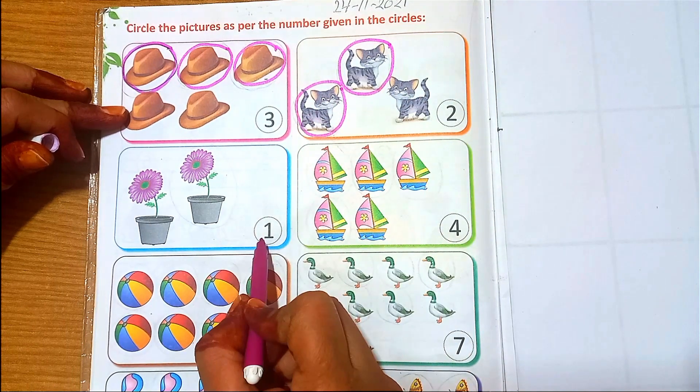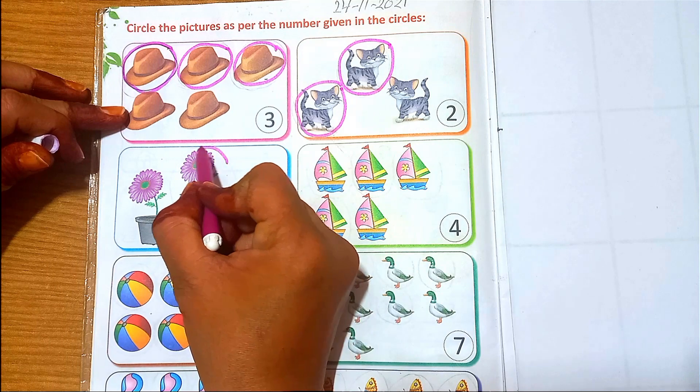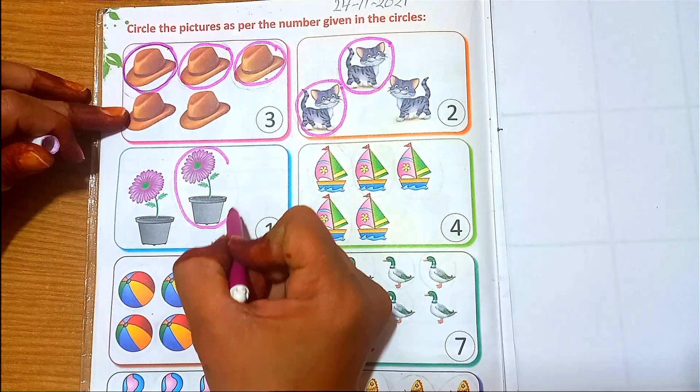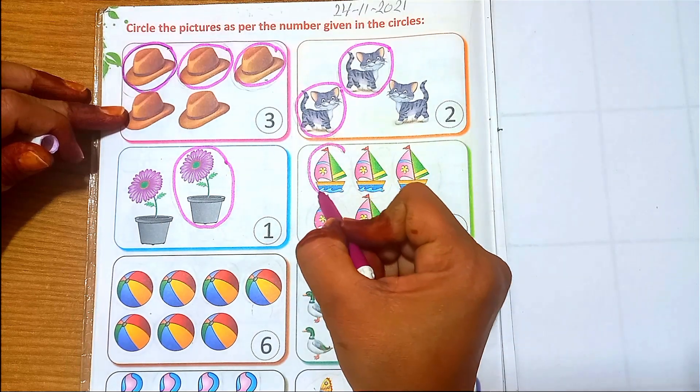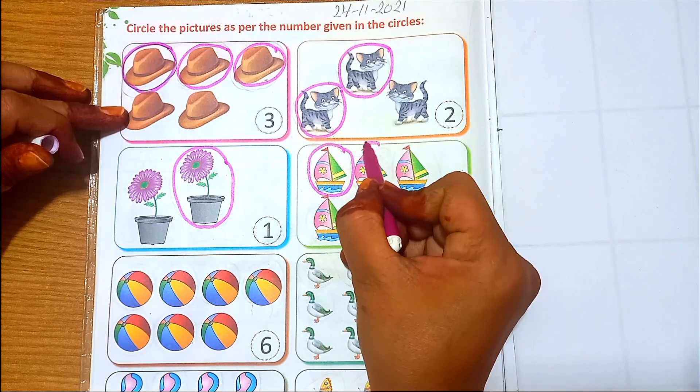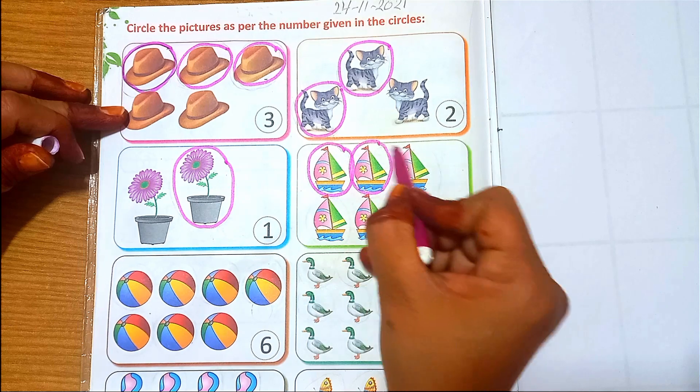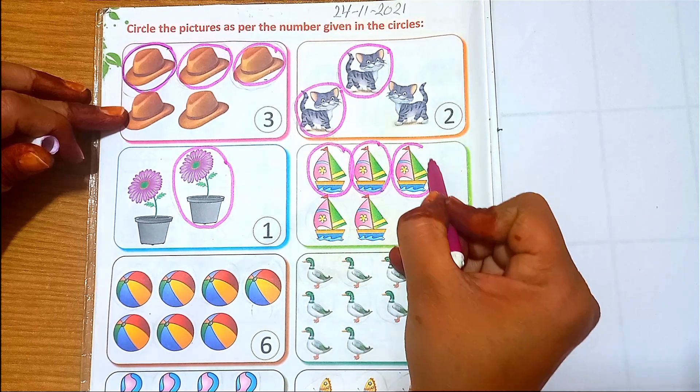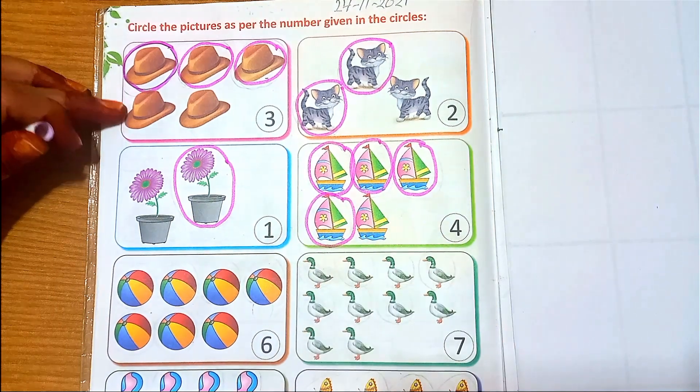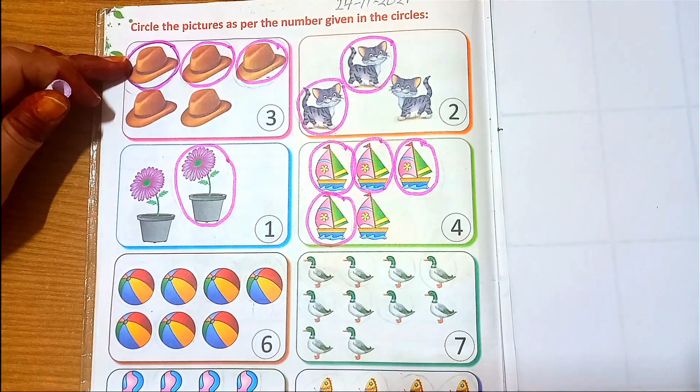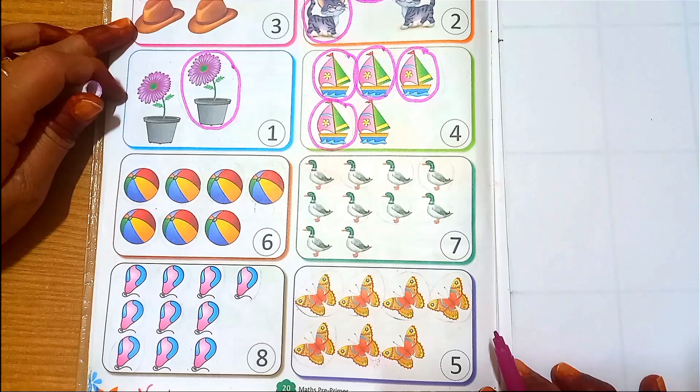Next. One, one flower pot. Three. One tree. One, two, and four boats. Next.